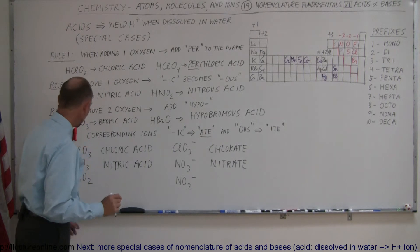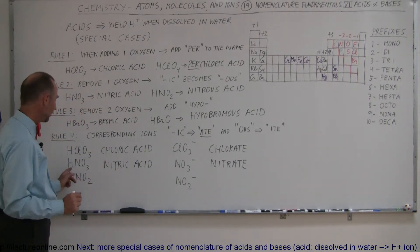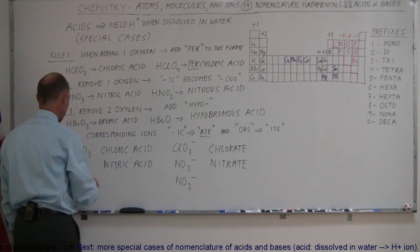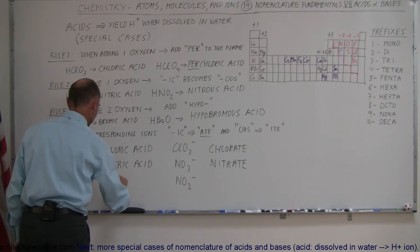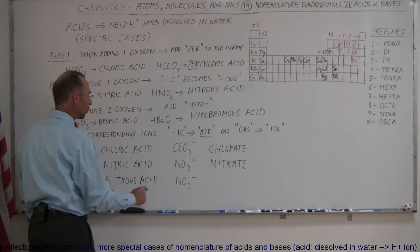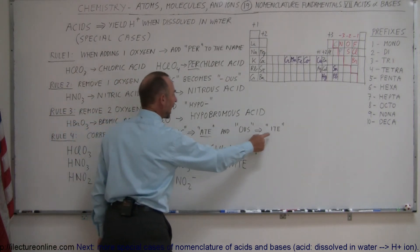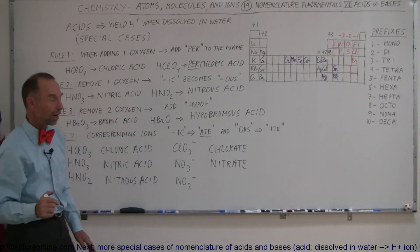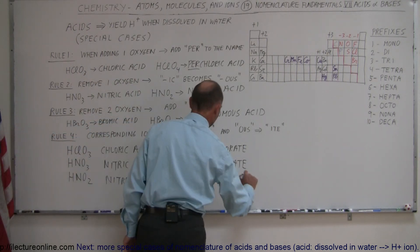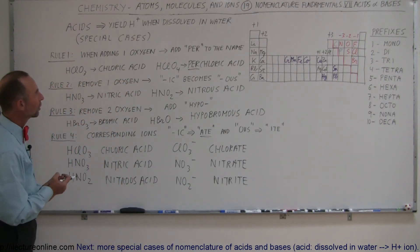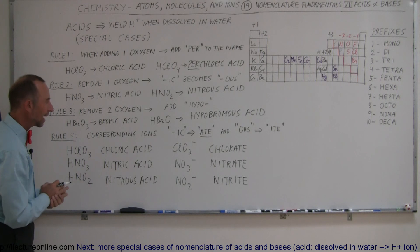But here things are a little bit different. Here we have HNO2 instead of HNO3. So the rule is, when we remove one oxygen, the -ic becomes -ous, so this would be nitrous acid. And so the corresponding ion is no longer called an -ate ion, it's now called an -ite ion. So this becomes nitrite ion instead of nitrate. So here are two exceptions that you have to deal with when you deal with acids and their corresponding ions.